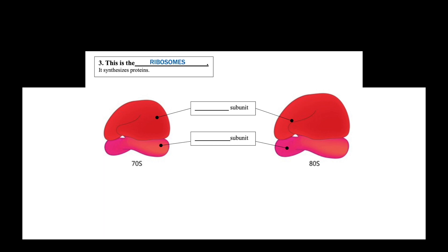This is the ribosome. It synthesizes proteins by reading the genetic information on the mRNA. The ribosome is made up of two subunits that come together to form a complete ribosome — the large subunit and the small subunit. The 70S ribosome is found in prokaryotic cells, while the 80S ribosome is found in eukaryotic cells.